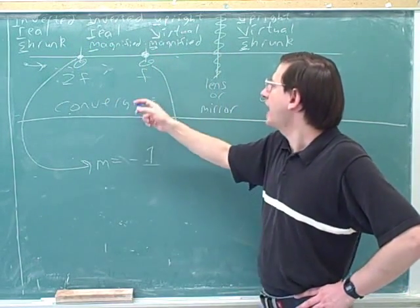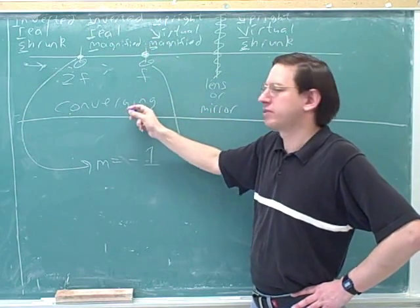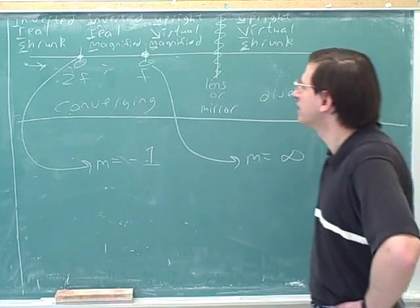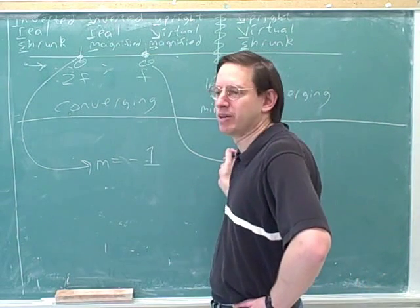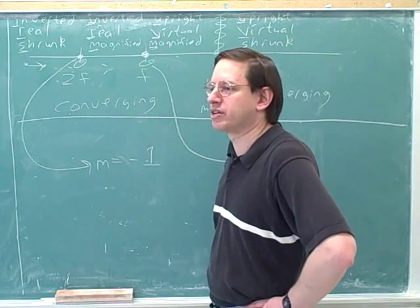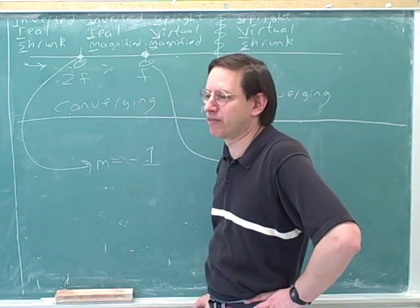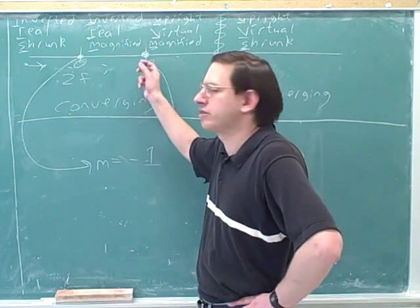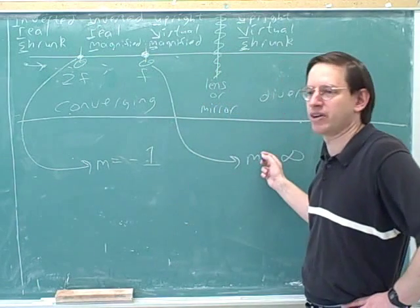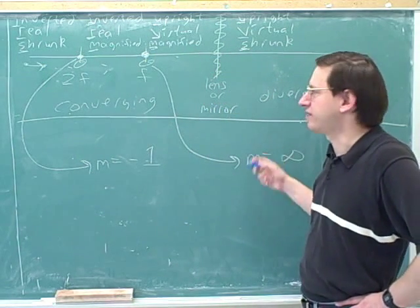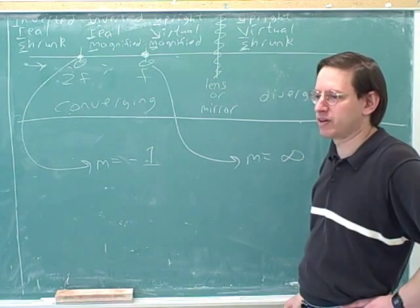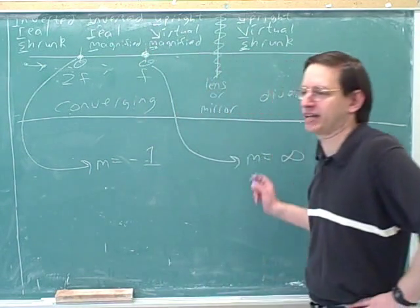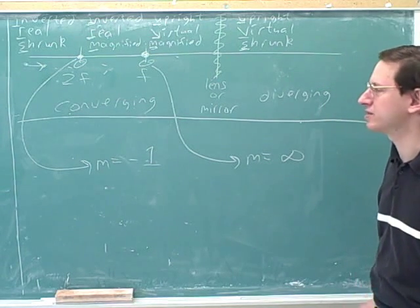But if you put the object at exactly the focal length for a converging device, you get infinite magnification. In a sense, there's almost no image here. Of course, in real life, nothing is ever precise — nothing's ever right at the focal length. So what this means is when the object is very, very close to the focal length, the image is very, very big. That's the practical meaning of this infinite magnification.